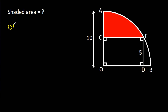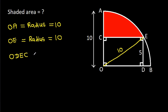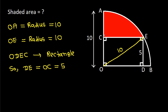OA will be equal to the radius, that is 10. And if we join OE, then OE will also be a radius, so OE is equal to 10. Also, ODEC is a rectangle, so DE will be equal to OC, which is 5.